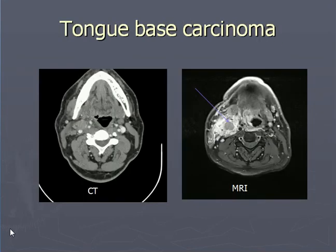This is a tongue base carcinoma. On the left side of the screen is CT which does not show much, while compared to the MR you can see there is a mass with surrounding fat stranding and contrast has been given. The things are very well picked up and you can see the carcinoma involving the base of the tongue on the right side.